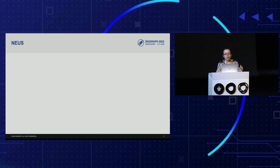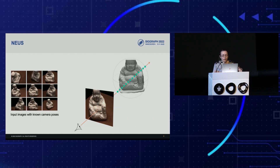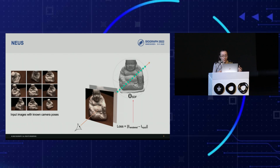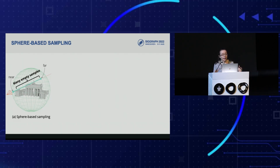Before diving into our method, let's take a closer look at how NeuS works, which we base our method upon. The input to NeuS is a set of images with known camera poses. NeuS shoots camera rays into a unit bounding sphere containing the object and samples points on the ray hierarchically using volume rendering to produce an image. This image is compared to the known input image, giving a signal for optimizing the parameters of a neural signed distance field. Since NeuS's coarse samples are spread across the sphere, we call this sphere-based sampling — it works well for small objects but is inefficient for large-scale scenes because many samples in empty space are wasted.